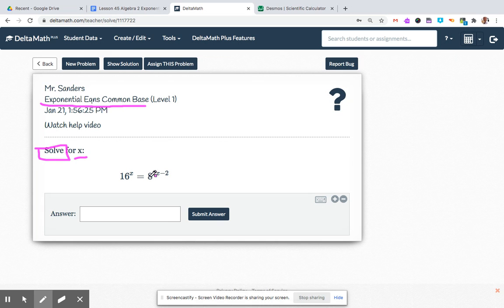So 16 and 8 are both base 2 numbers. If you're not sure, you can always do a prime factorization tree. Here's 16, here's 8. 2 times 8, 2 times 4, 2 times 2. And then 8 is 2 times 2 times 2. So 16 is 2 to the 4th, and 8 is 2 cubed.